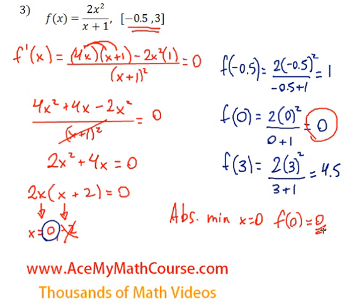And that's the absolute minimum, of course, just 0. And the absolute maximum is 4.5. Absolute maximum when x is equal to 3 of 4.5. That's it. See you next time. Thank you.